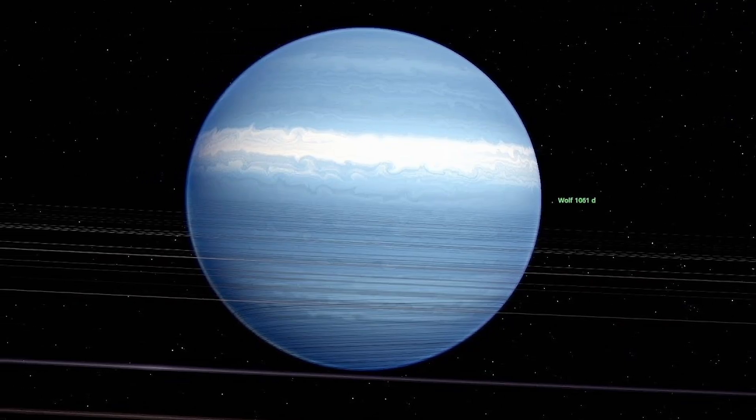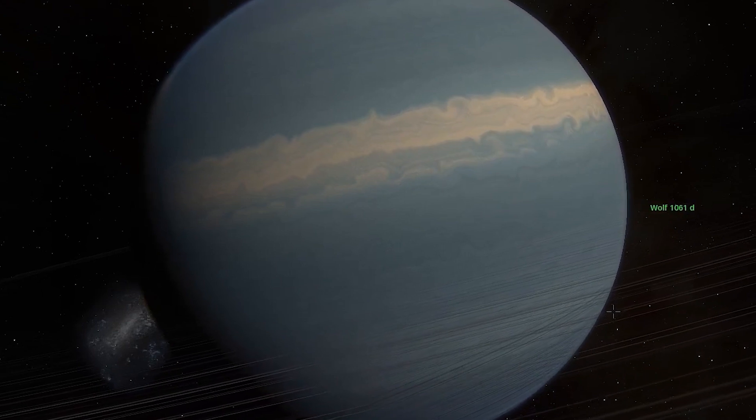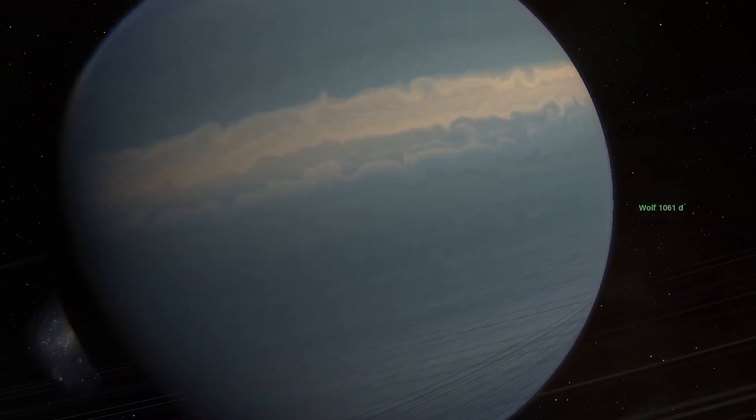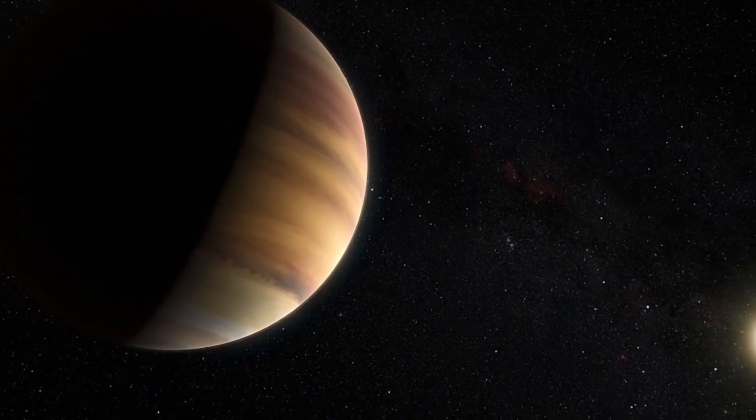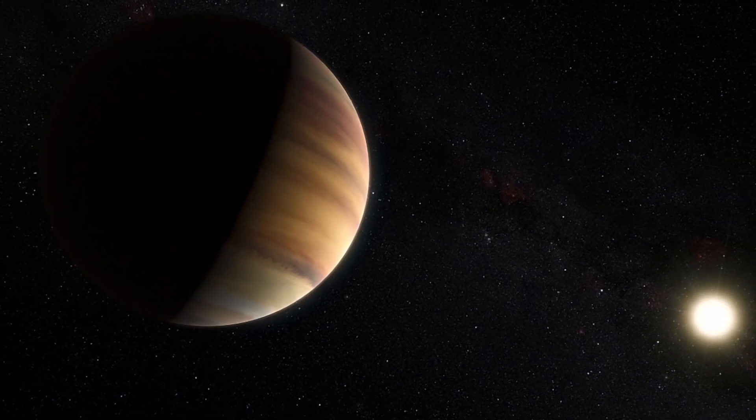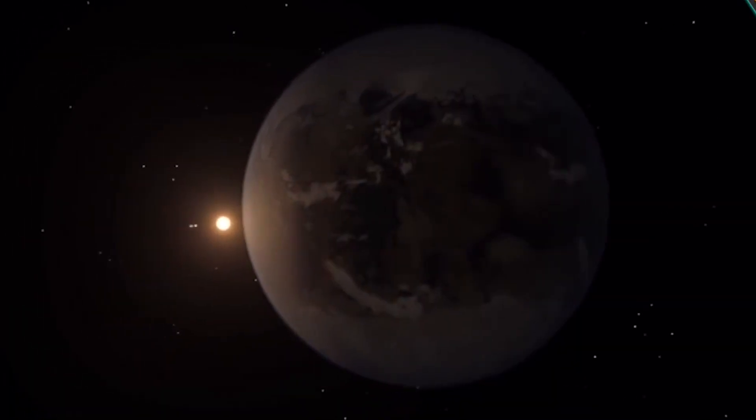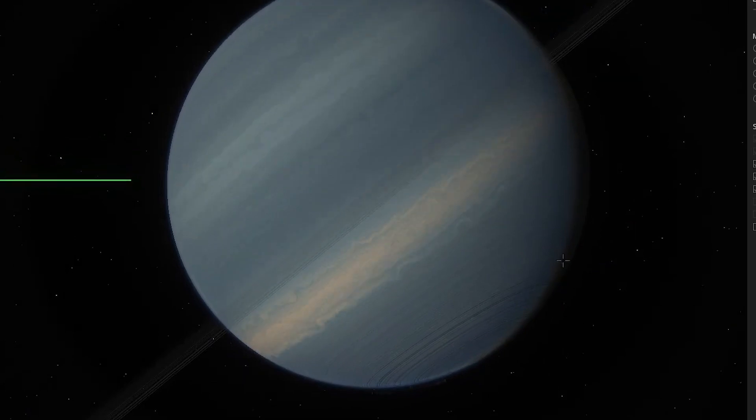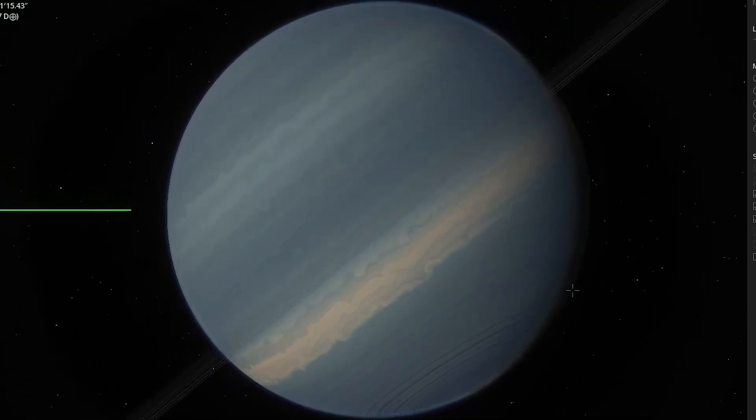The third object is Wolf 1061d. Its distance from its parent star is 0.73 astronomical units. The mass of this exoplanet is roughly 7.7 times that of our Earth. It never enters into its star's habitable zone. This celestial body is completely unsuitable to support any kind of life.